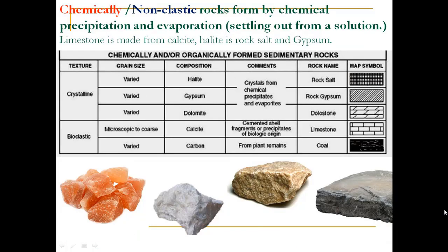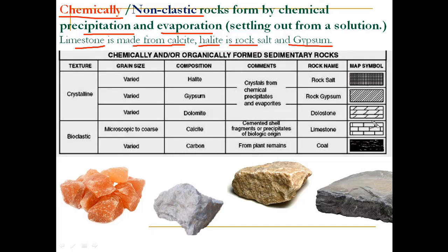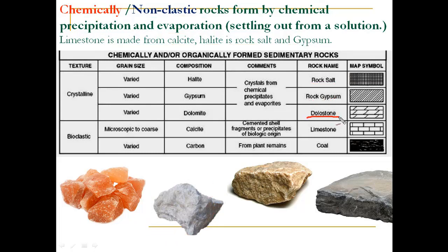Now the second way by which sedimentary rocks are formed: chemically formed sedimentary rock. In this, we will not see clasts or rock fragments. They are mainly formed due to chemical precipitation and evaporation, settling down in solution. Examples include halite (rock salt) and gypsum. As seen in the table, rock salt is primarily formed due to the deposition of halite, and rock gypsum is formed due to chemical precipitation or evaporates. Dolostone is also a crystalline, chemically formed sedimentary rock.